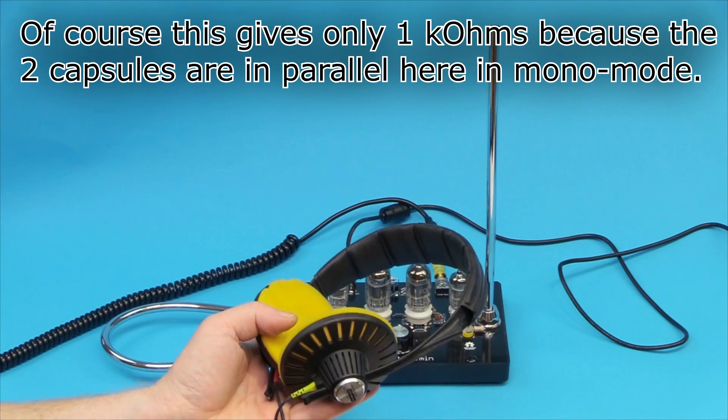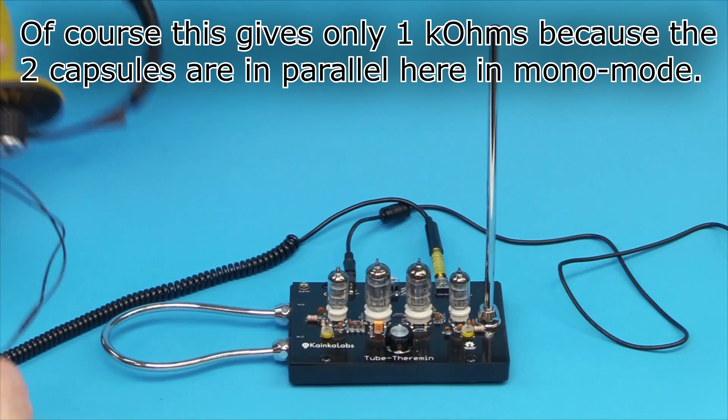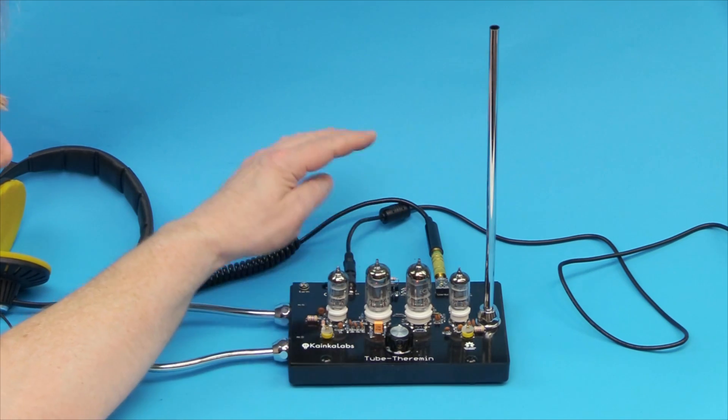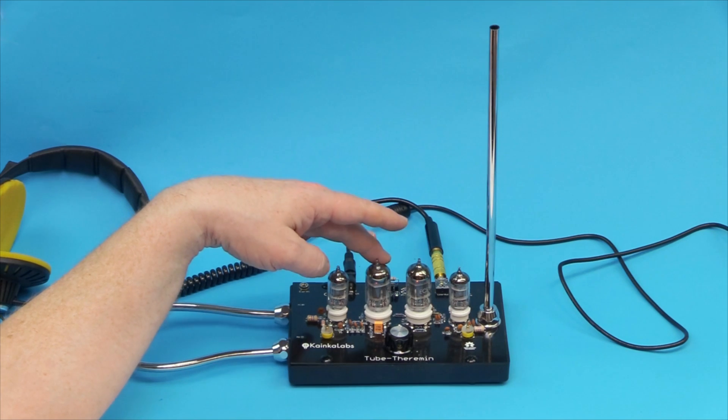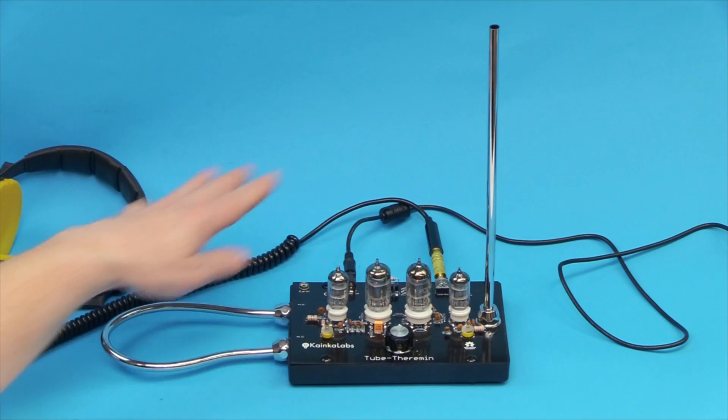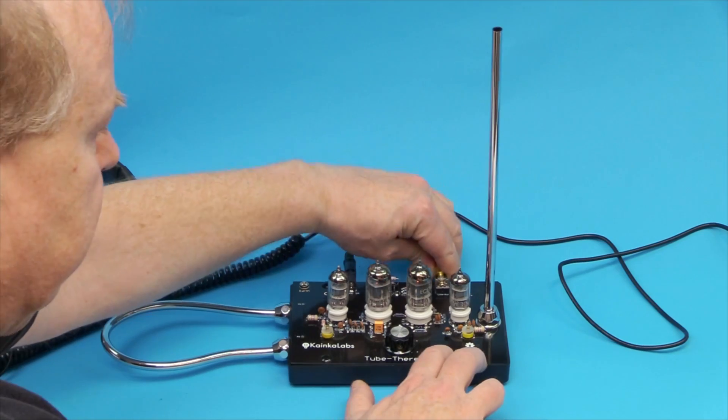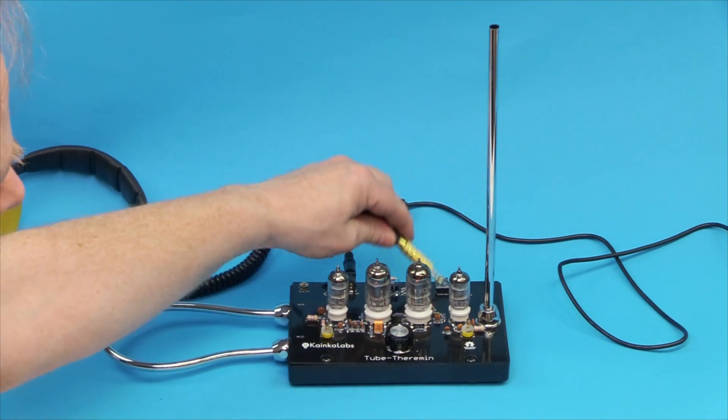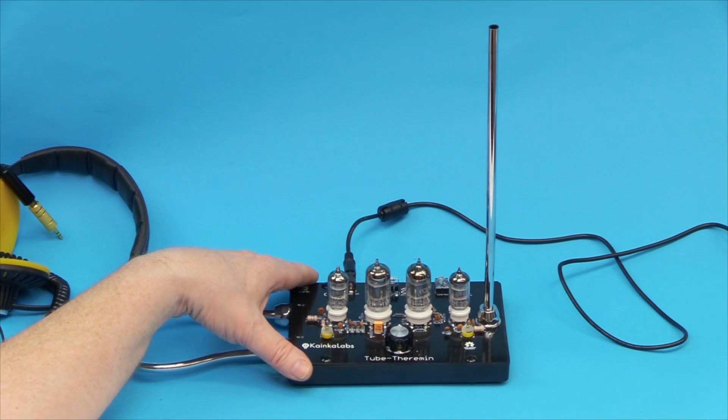But you can only get such high impedance headphones on the second hand market at eBay. If you plug in a modern headphone with only eight to 32 ohms, you won't hear anything because the tubes can drive voltage, but they cannot drive current and the modern headphones need current. So simple solution is connect this via the 3.5 millimeter stereo output to your audio amplifier. And you can hear then from your stereo amplifier the sound.